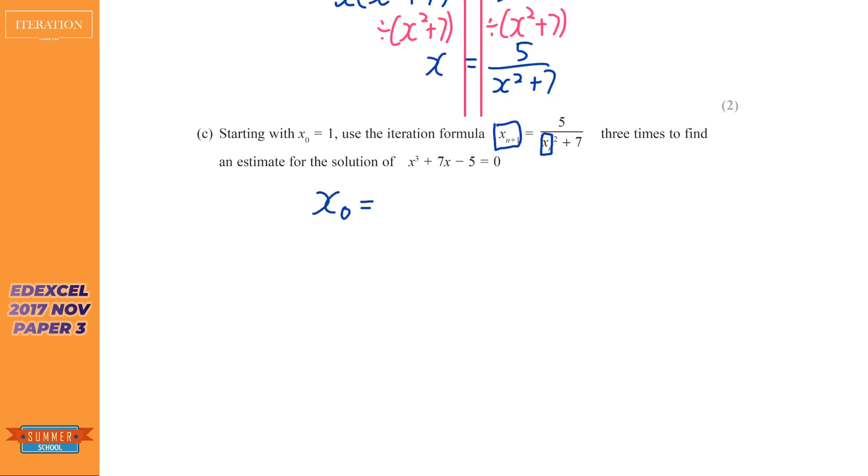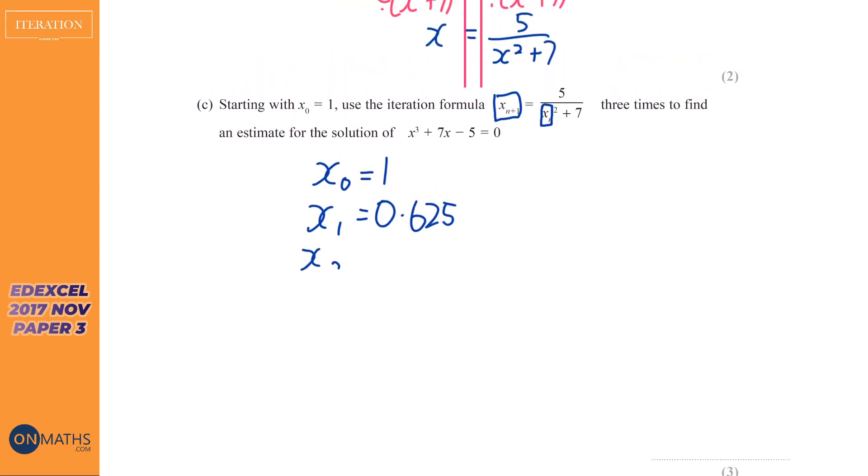So we know that we're going to put the previous term here, and that will get us the next term, but we also know the much better approach of this. So x zero is one. To find x one, what we're going to do is we're going to just press one on our calculator, then equals, then we're going to do the fraction button five over answer squared plus seven. And then we're just going to press equals, and it gives it as a fraction, but I'm just going to write down each one along the way. Now, always check the marks. It's three marks, so we know that we're going to have to show some working out along the way.